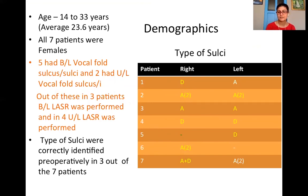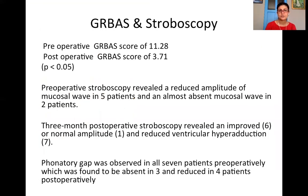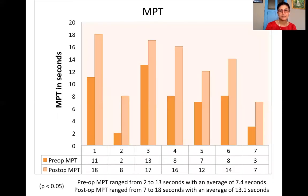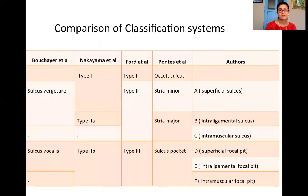The results of our surgery showed the GRBAS score had a statistically significant improvement from 11.28 to 3.7. There was also improvement in stroboscopy: ventricular hyperfunction resolved in all patients post-operatively, and the phonatory gap was either absent or remarkably reduced. Maximum phonation time increased from 7.4 seconds to 13.1 seconds, which was again statistically significant. Comparing our system with existing classification systems, our system defines both the length and depth of each sulcus type in both the linear group and the focal pit group.